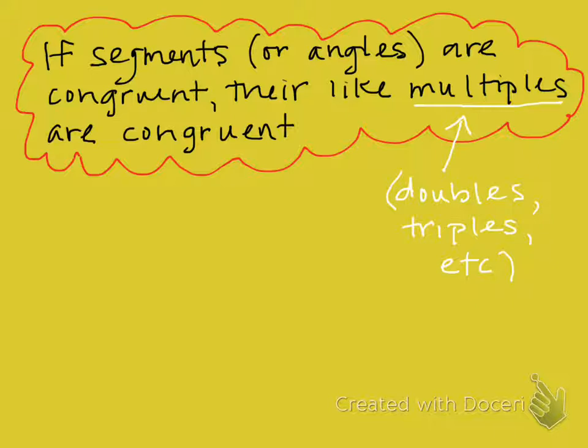Our first theorem says that if segments or angles, this can apply to either segments or angles, are congruent, then their like multiples are congruent. And by multiples we mean, for example, doubles, triples, etc.